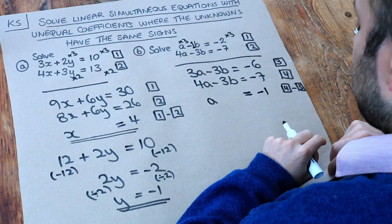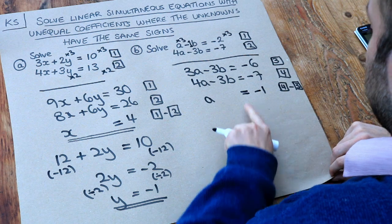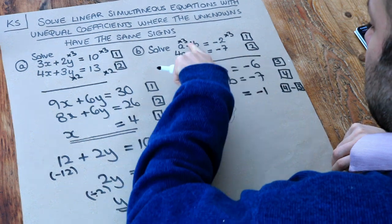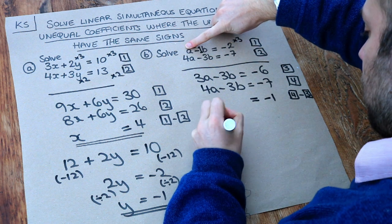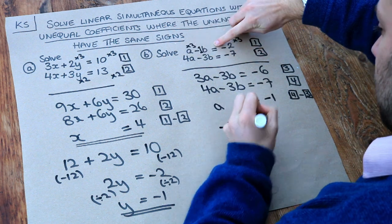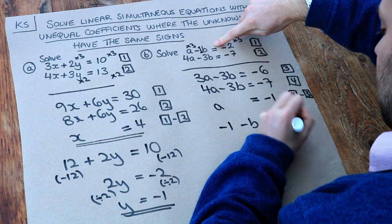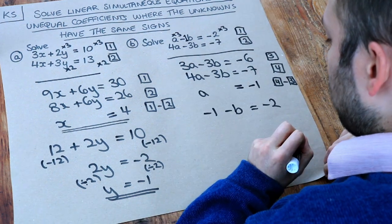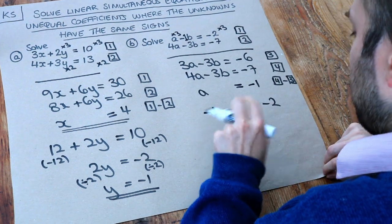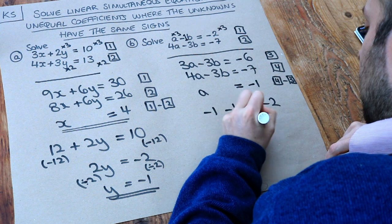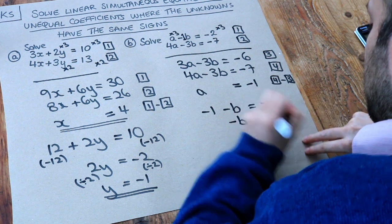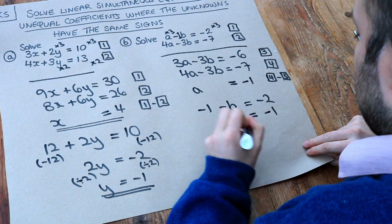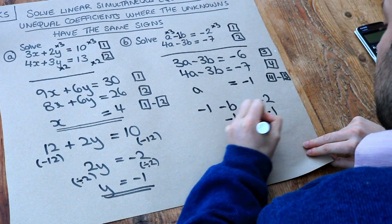So we found the value of a. And then we just substitute it into either equation. Again, I'm going to just pick this first equation here. So we've got a, which is minus 1, minus b is equal to minus 2. There's negatives all over the place here. Now if we add 1 to both sides to get rid of that minus 1, we get minus b is equal to minus 2 plus 1 is minus 1. Then if we times both sides by minus 1, we just get b is equal to 1.